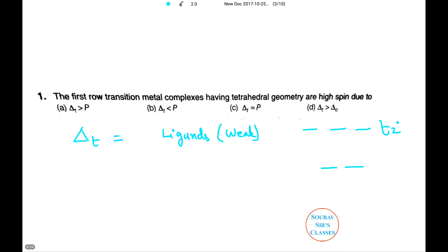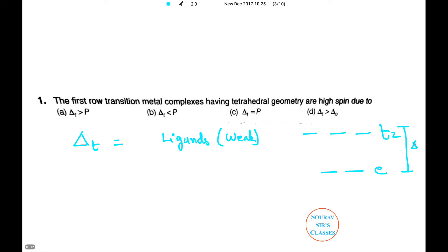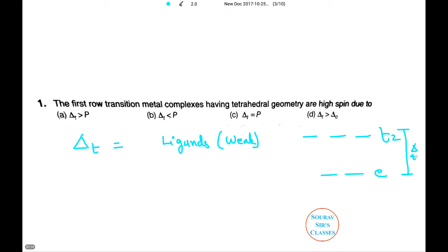So the difference between T2 and E, which we call Δt, is very less than the pairing energy. Since Δt is less than pairing energy, the electrons tend to fill up all the E and T2 orbitals rather than pairing themselves. And we all know that when the electrons are unpaired, they are all high spin complexes.